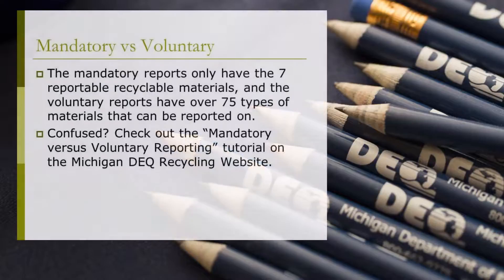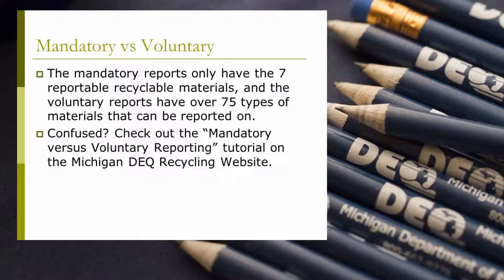The only difference between mandatory and voluntary report surveys are the types of material options listed to be reported on. The mandatory reports only have the seven reportable recyclable materials, and the voluntary reports have over 75 types of materials that can be reported on. It is still important, however, to choose the correct category of reporter your establishment is because of the way the data can be analyzed and used by the department. If you are unclear as to whether your establishment is a mandatory or voluntary reporter, you can check out the mandatory versus voluntary reporting tutorial on the Michigan DEQ recycling website.